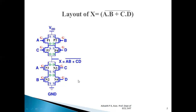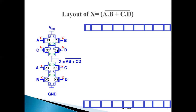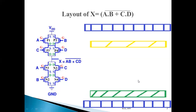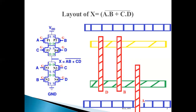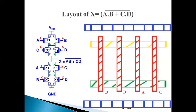The first thing we do when representing a layout diagram is to draw the VDD rail as well as the ground rail, leaving sufficient space between them so that we can implement pMOS transistors as well as nMOS transistors. To implement pMOS transistors, we need p-type diffusion. To implement nMOS transistors, we need n-type diffusion. Only when diffusion crosses polysilicon do we form transistors — when p-type diffusion is crossed by polysilicon, we get pMOS transistors, and when n-type diffusion is crossed by polysilicon, we get nMOS transistors.